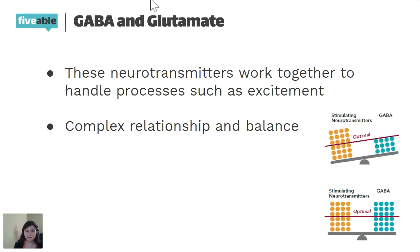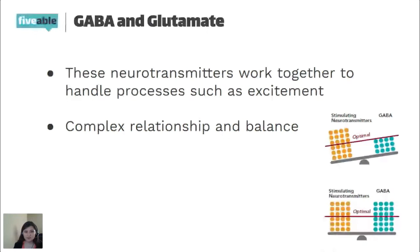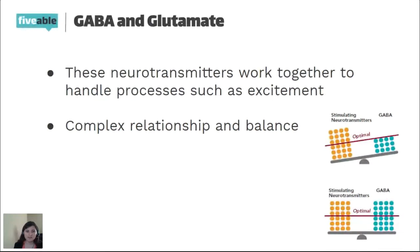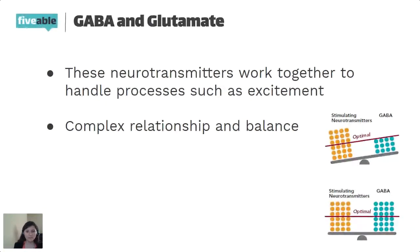GABA and glutamate work together to handle processes such as excitement, and they have a complex relationship and balance. You don't want too much of one or too little of the other — you want an even balance, because otherwise one will begin to disrupt your whole body's chemistry.